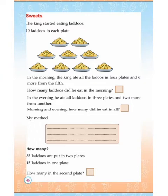Now you can see a heading: Sweets. Do you like sweets? The king started eating laddos — a laddo is a sweet. You can see in each plate there are 10 laddos. In the morning the king ate all the laddos in 4 plates and 6 more from the 5th.